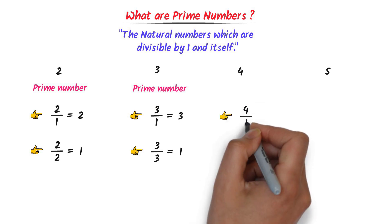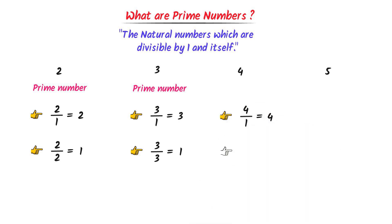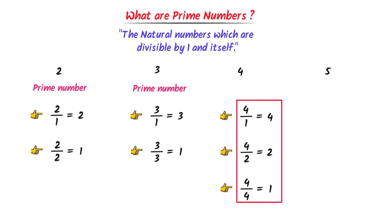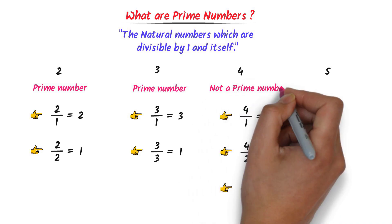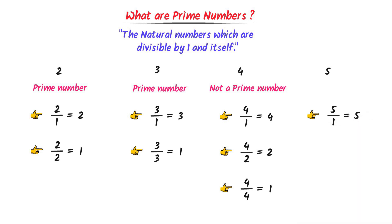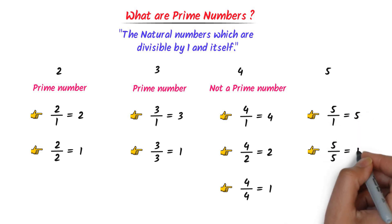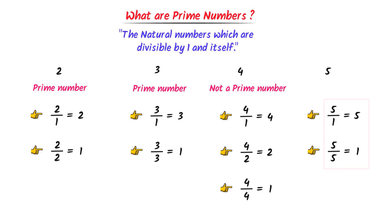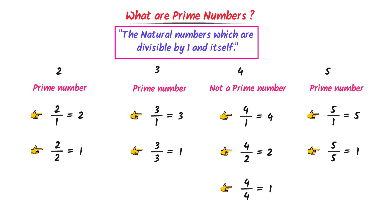Thirdly, we can divide 4 by 1 to get 4, by 2 to get 2, and by 4 to get 1. Hence, we can divide 4 by 1, 2, and itself — it has more than 2 divisors, so it is not a prime number. Fourthly, we can divide 5 by 1 and by 5 only. It has only 2 divisors, so it is a prime number. Remember, prime numbers are those numbers which are divisible by 1 and itself.